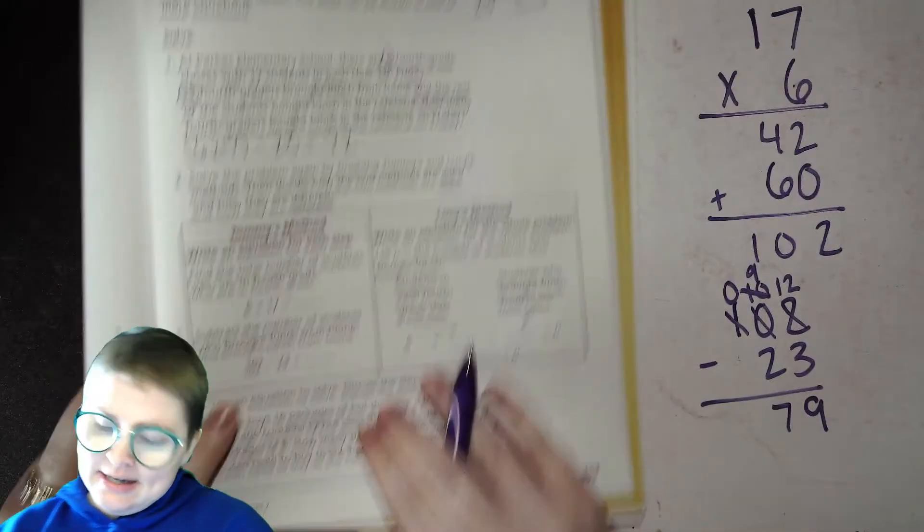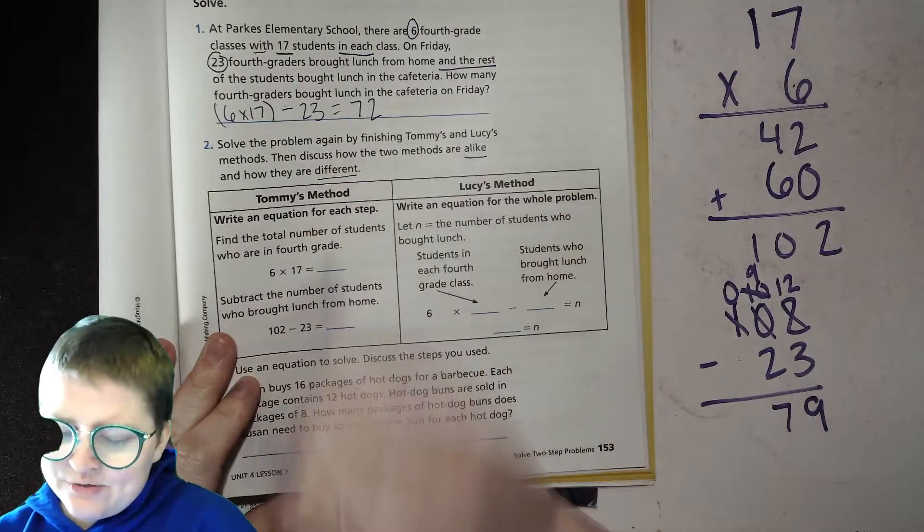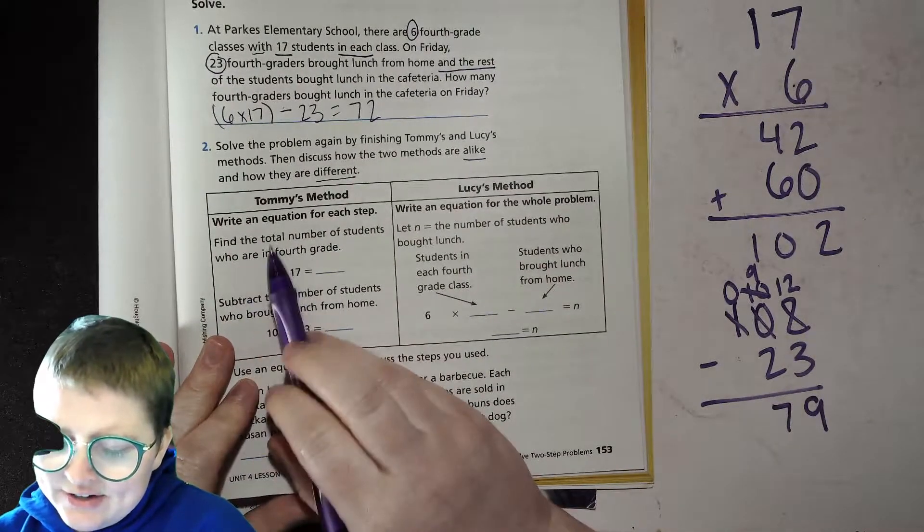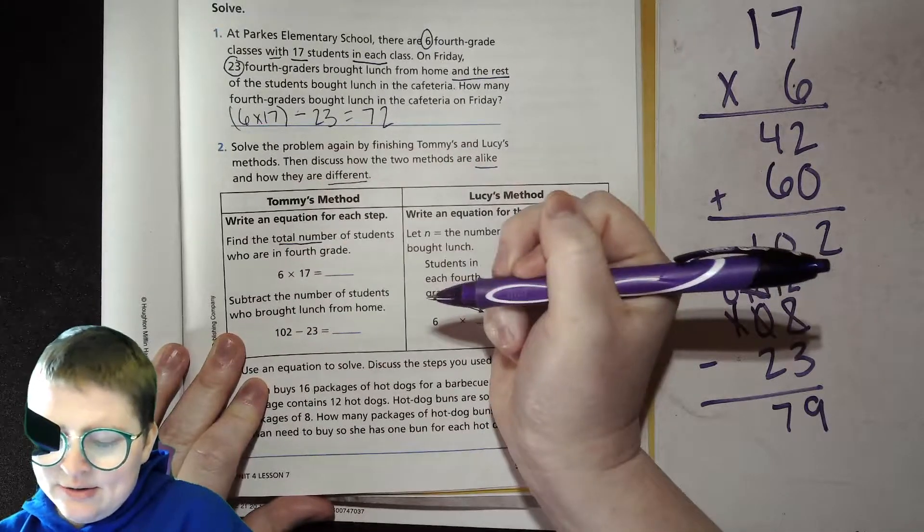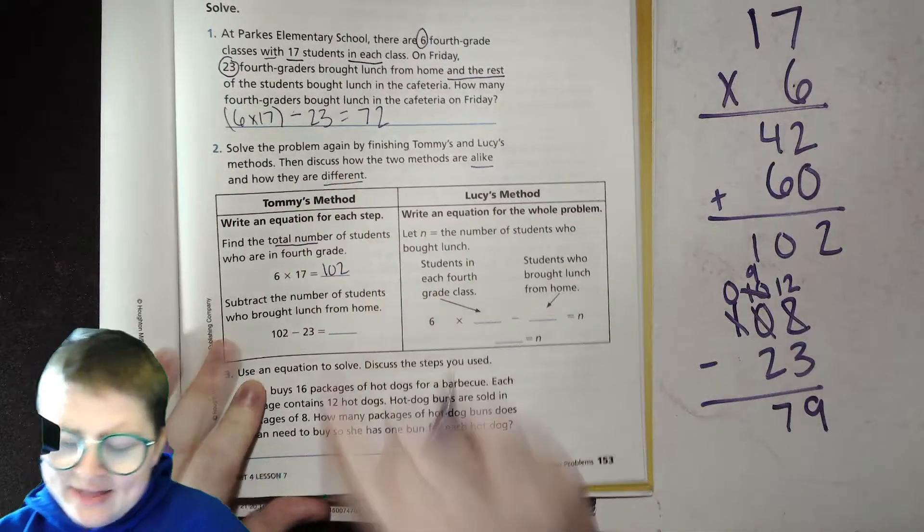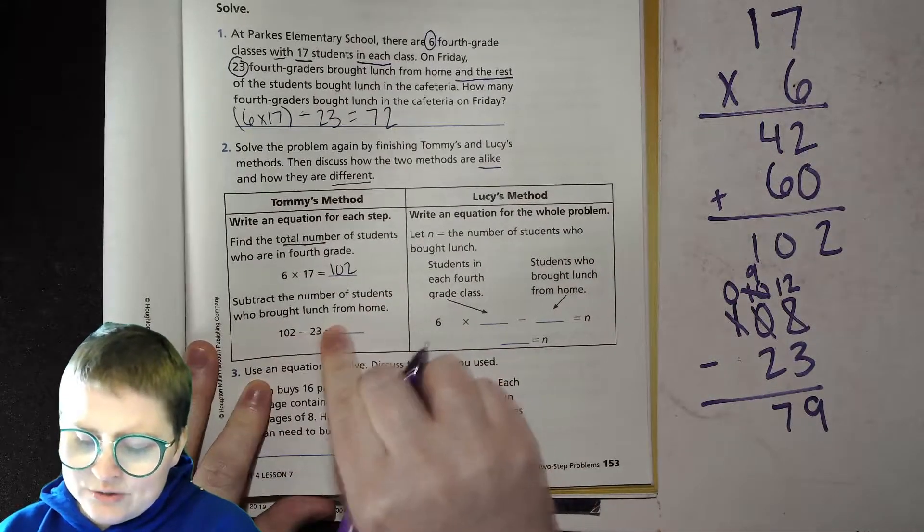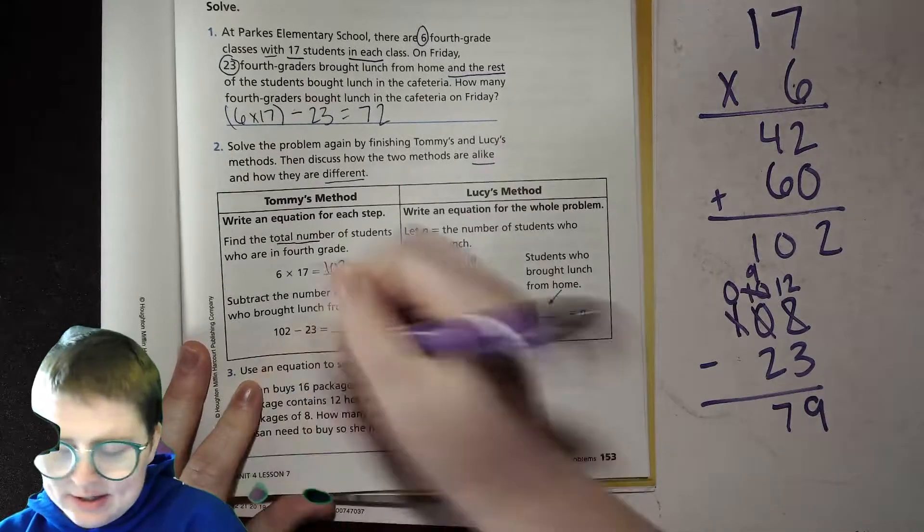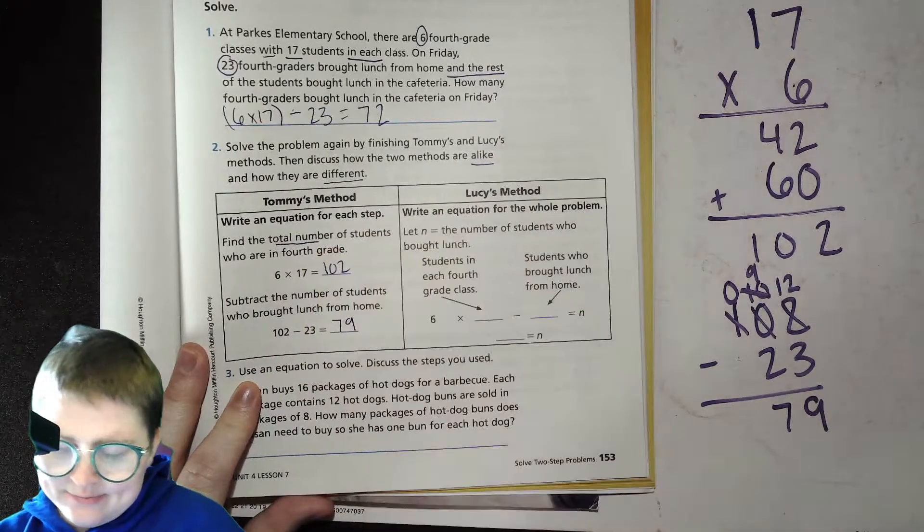Tommy's method, he writes an equation for each step. First, he's finding the total number of students who are in fourth grade. We did that too, and that was 102. Then he subtracted the number of students who brought lunch from home. We did that too, and we got 79.